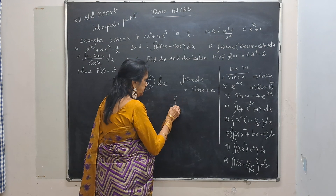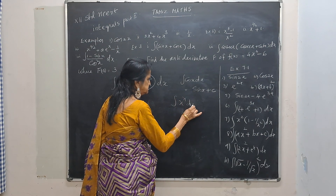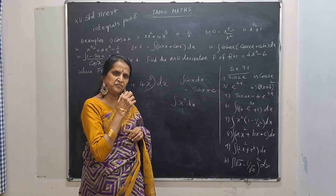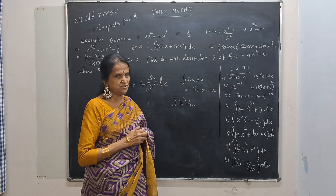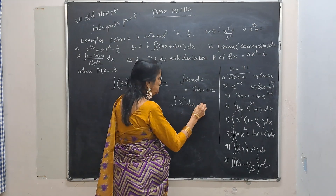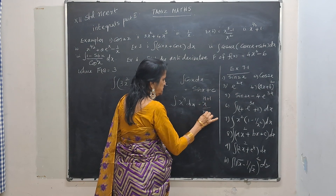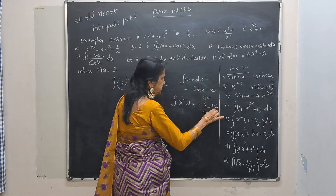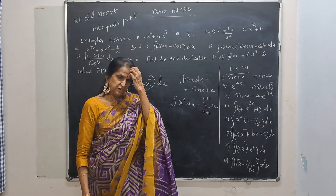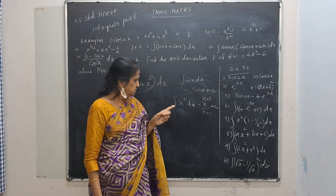Our second formula: we are going to integrate x to the power n dx. I want an answer there — when I differentiate that answer, I should get x to the power n. So that will be, by inspection, x to the power n+1 divided by n+1, plus c. Differentiate this: (n+1) into x to the power n+1 minus 1, that will be x to the power n.